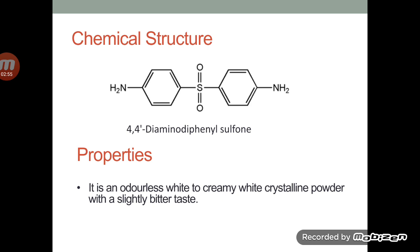This is the chemical structure of Dapsone. Here you can see two phenyl groups which are centrally linked with the sulfone group and at the para position the two amino groups are present. So its IUPAC name is 4,4-diamino-diphenyl sulfone. The basic properties of Dapsone are that it is odourless, white to creamy white crystalline powder and has a slightly bitter taste.